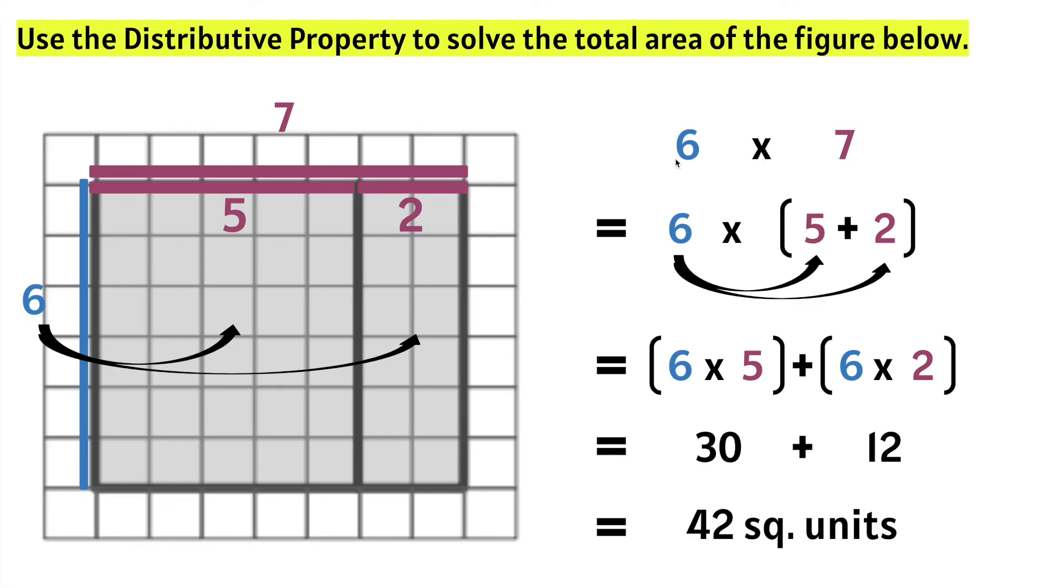So we can go back to the original equation, which is six times seven. And we know that equals 42. So six times seven is the same thing as six times five plus six times two, both equal 42.